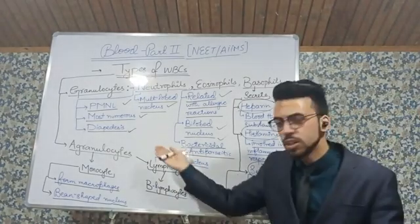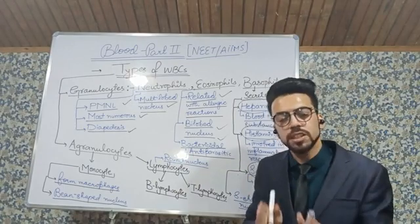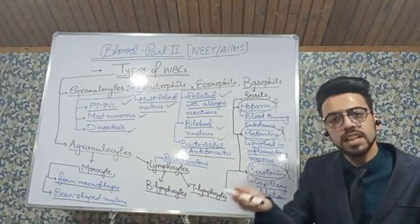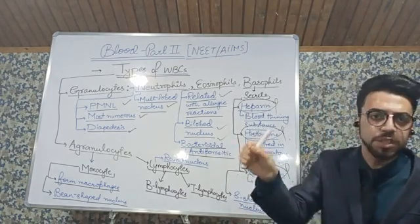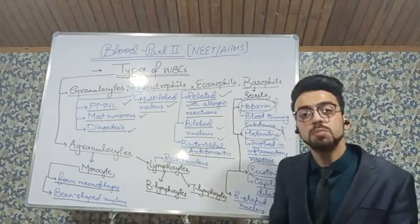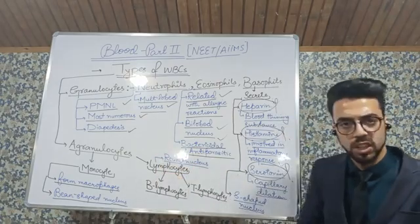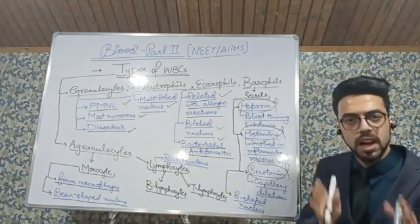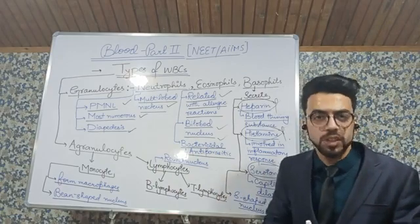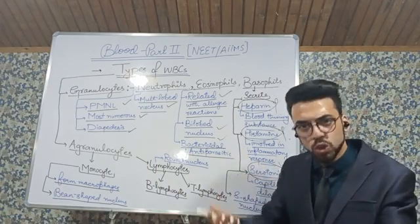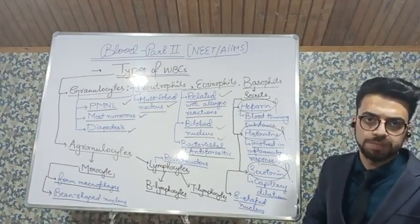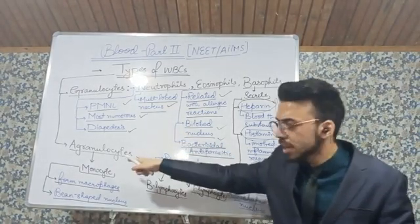Then we talk about agranulocytes. Agranulocytes are those types of WBC cells which do not have grain-like deposition in their cytoplasm. They come in two groups: the first is monocyte and the next is lymphocyte. Monocyte is the largest WBC cell; they circulate in body fluids for up to about eight hours, absorb materials to grow, and ultimately become macrophages.